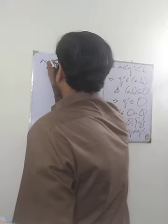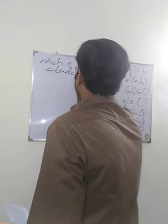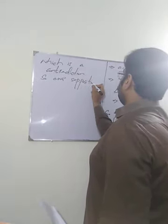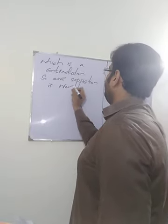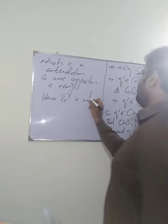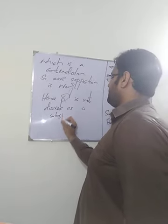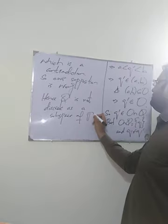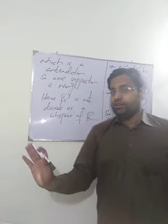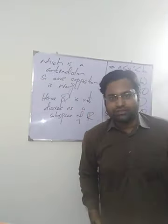This is a contradiction. Therefore our supposition is wrong, and hence Q is not discrete as a subspace of R. Because when we assumed it was discrete, a contradiction arose. Also, this question has not been solved by any Pakistani author of topology — it is an exercise question from Munkres' topology book — so it is an achievement and honor for me to solve this question. Thank you so much.